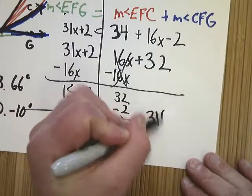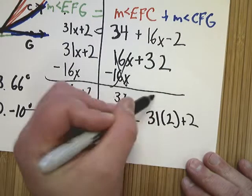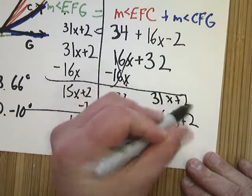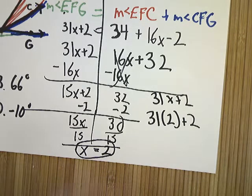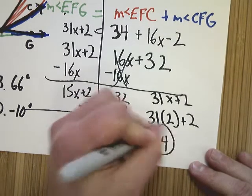So 31. I was just doing 31x plus 2. I plugged in the value of x that I got. 31 times 2. That's 62. Plus 2 more. That gives me 64.